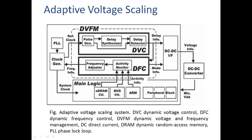The dynamic voltage scaling and dynamic frequency scaling along with the main logic are on-chip circuitry. The DC-to-DC converter is the off-chip one. The signal is given to the DC-to-DC converter, and according to that signal, the voltage is generated. In dynamic voltage scaling, it detects the delay.